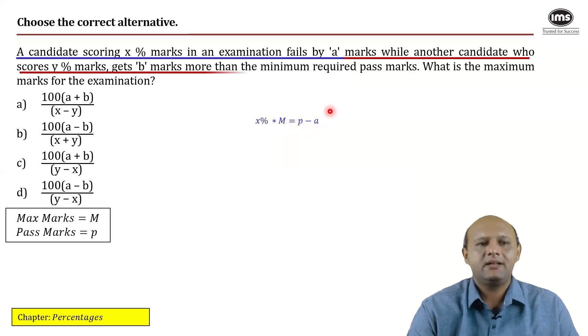While the other candidate who scores Y percent marks gets B marks more than the pass marks. So how would the equation turn out to be? It would be Y percent of M equal to P plus B. So that would be B marks more than the passing marks.